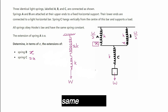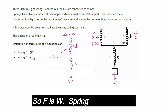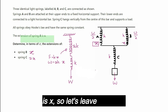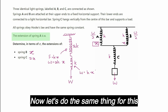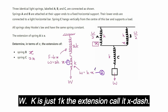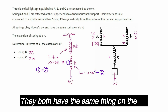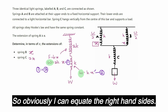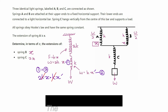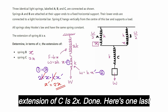For the parallel combination of A and B, F equals W and k equals 2k, and the question states extension is x. For spring C, F equals W and k equals k, with extension x-dash. Since both equations have W on the left, equating the right-hand sides: 2k·x equals k·x-dash. The k's cancel, giving x-dash equals 2x. All three approaches confirm the extension of spring C is 2x.